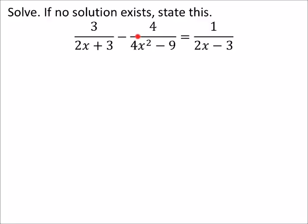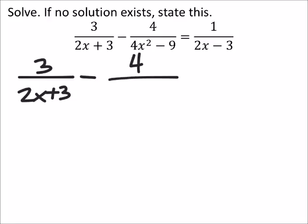So, what I notice right here is that I've got a 4x squared minus 9, which is a difference of two perfect squares. So, I can split that up. So, this is the first term. I'm going to subtract this from 4 over 4x squared. That would be 2x quantity squared. And then 9 is 3 squared. So, that gives me 2x minus 3 and 2x plus 3.